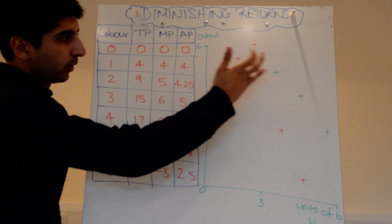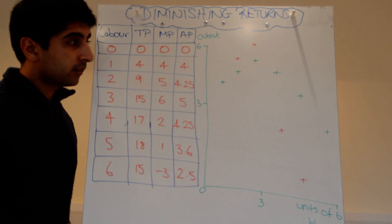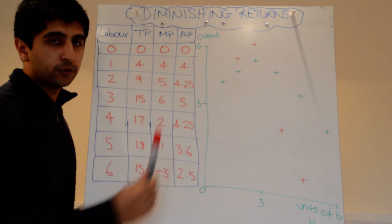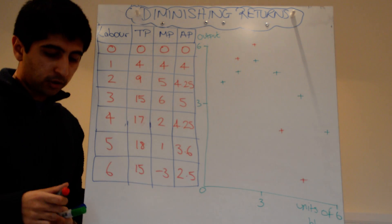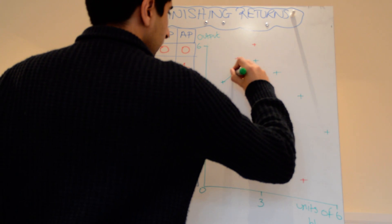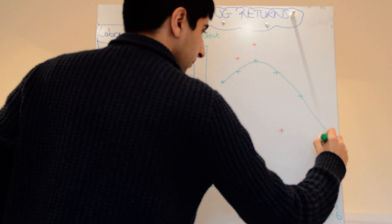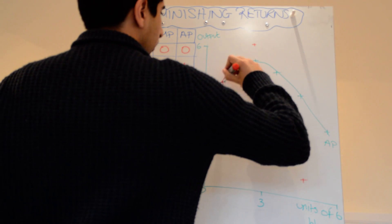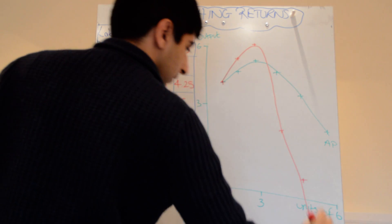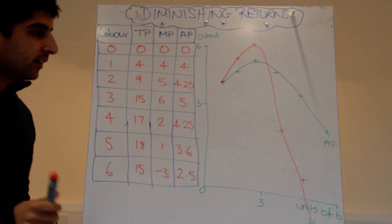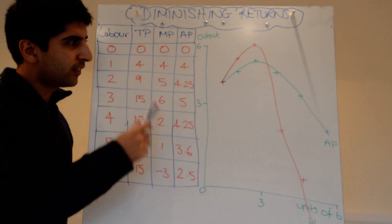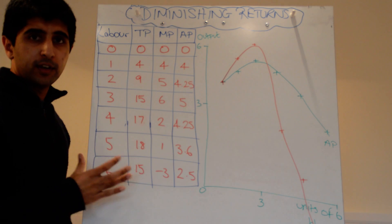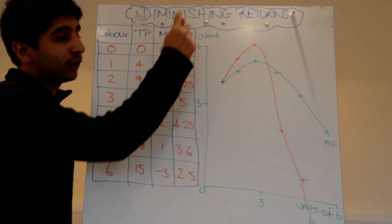The green points represent the average product and the red points represent the marginal product. Let's connect those points roughly to form curves — the key thing to take away is the shape of the curves, not the exact drawing. We can understand why these curves are shaped the way they are because of the law of diminishing returns.